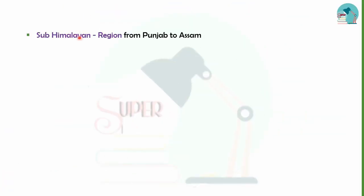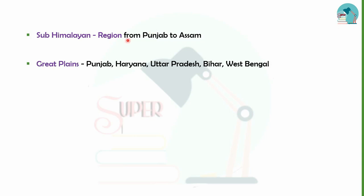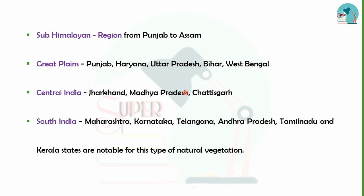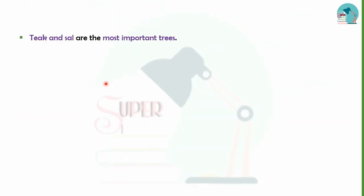Tropical deciduous forest is distributed across the sub-Himalayan region, Punjab plains, Uttar Pradesh, Bihar, West Bengal, Jharkhand, Madhya Pradesh, and Chhattisgarh. It is also found in South India. The most important tree here is Teak.